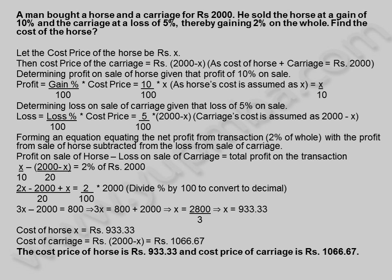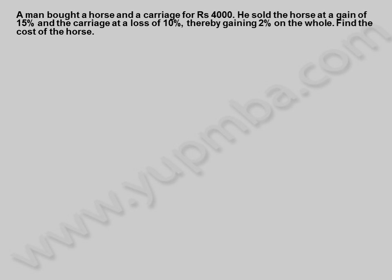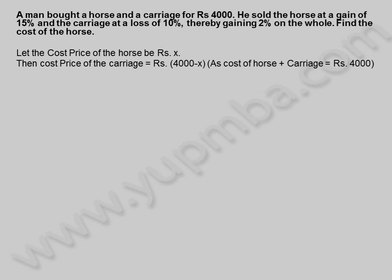Let us see another example. A man bought a horse and a carriage for Rs. 4,000. He sold the horse at a gain of 15% and the carriage at a loss of 10%, thereby gaining 2% on the whole. Find the cost of the horse. Let the cost price of the horse be X rupees. Then cost price of the carriage is equal to 4,000 minus X rupees, as cost of horse plus carriage equals 4,000 rupees.